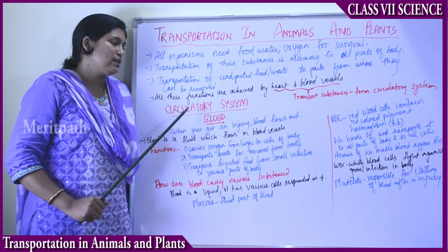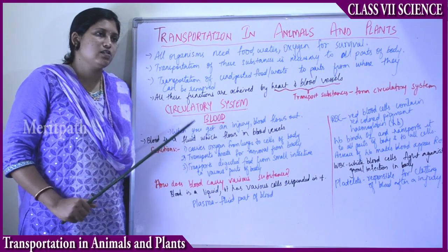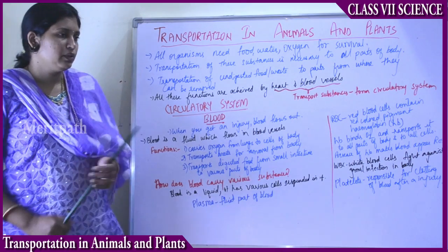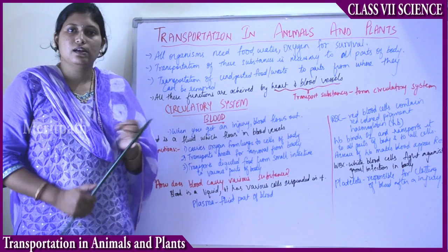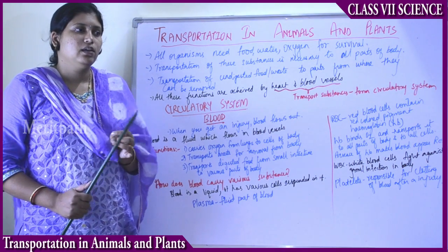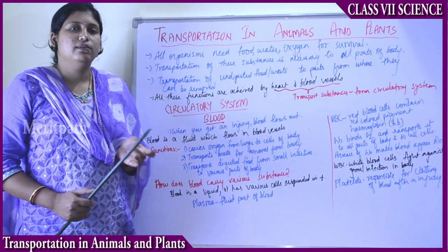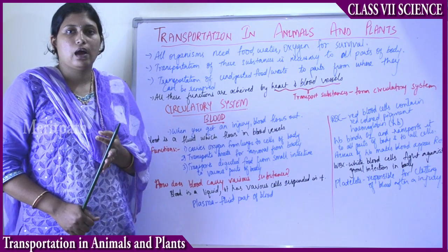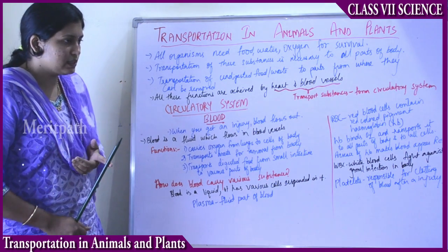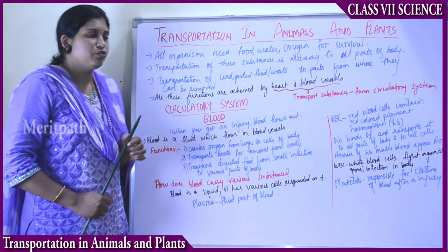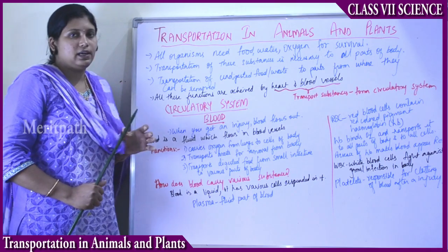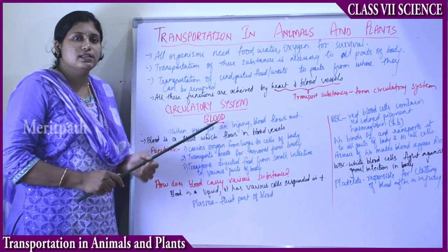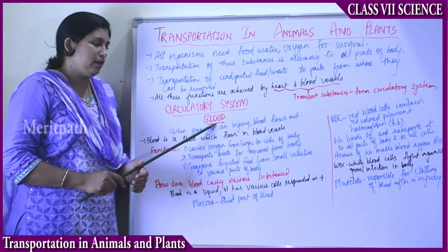So what is the circulatory system and what all things come under it? The main components are blood, blood vessels, heart, pulse rate, and breathing rate. The first thing in the circulatory system is blood.